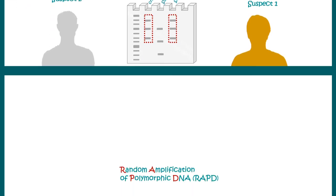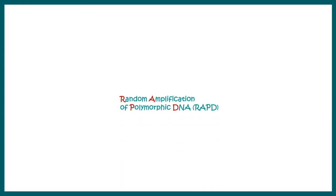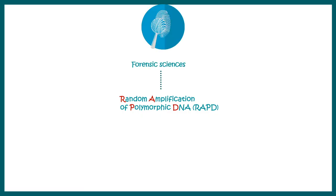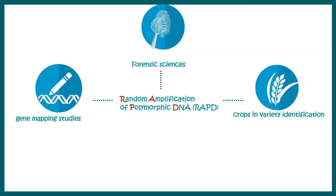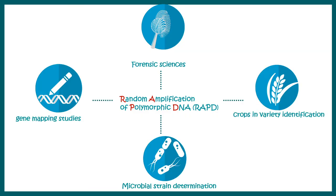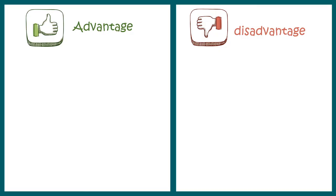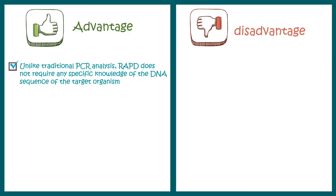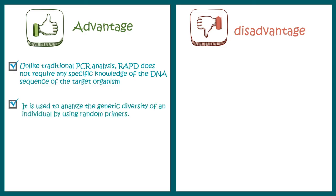There are several applications of RAPD: forensic sciences, gene mapping, crop variety identification, and microbial genetics. Advantages include no need for prior DNA sequence information, the ability to analyze genetic diversity using a set of random primers, and the technique can be performed with very low amounts of DNA.